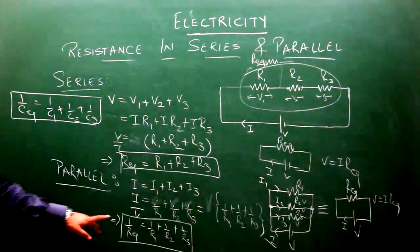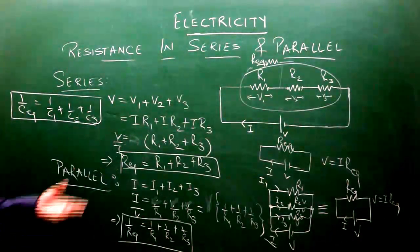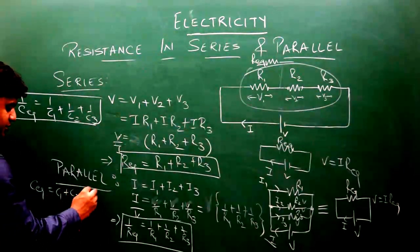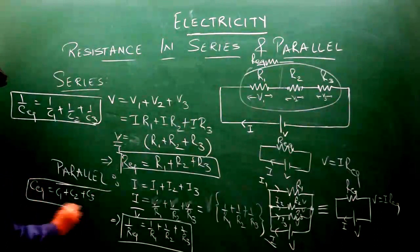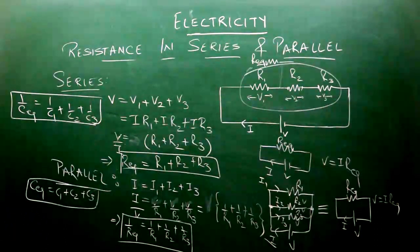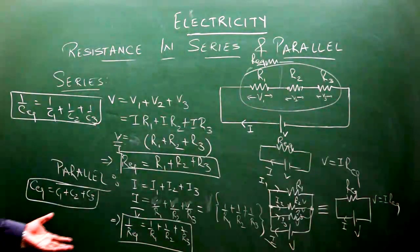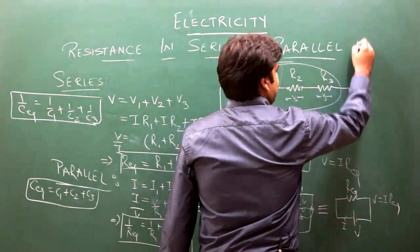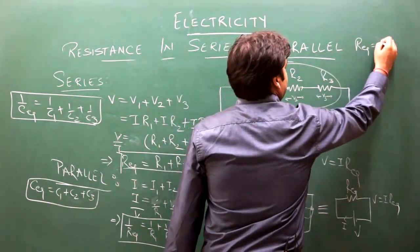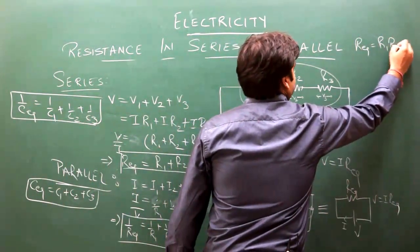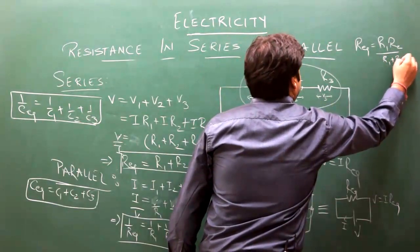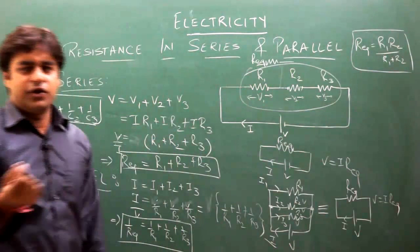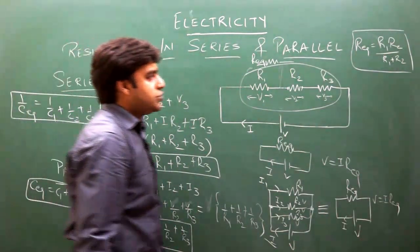For capacitors in parallel, C_equivalent = C1 + C2 + C3. Notice that capacitance formulas are opposite to resistance formulas: series resistance adds directly, parallel uses reciprocals. For capacitance, it's reversed.